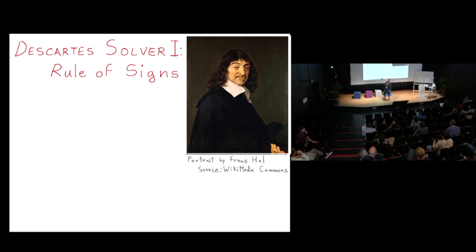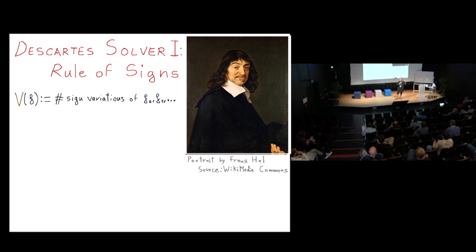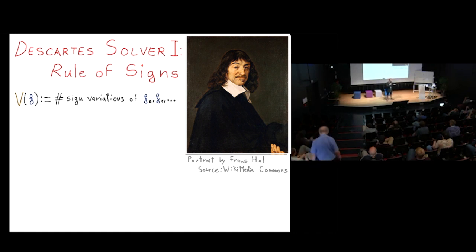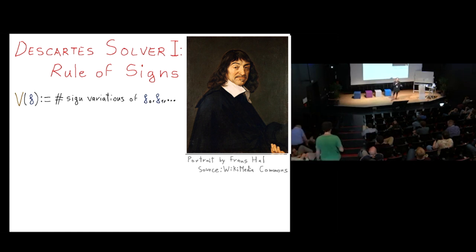Now we go to our friend Descartes and his rule of signs. You take a polynomial, look at its coefficients f0, f1, etc., and count how many times the sign changes — ignoring zero coefficients. A sequence like minus, zero, minus, zero has no sign variation.